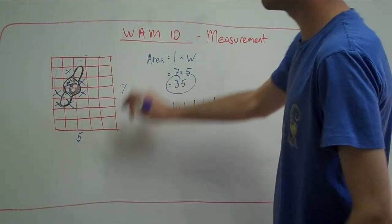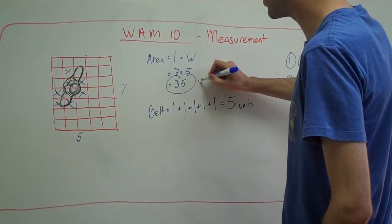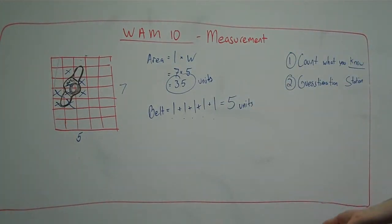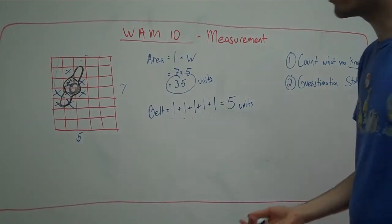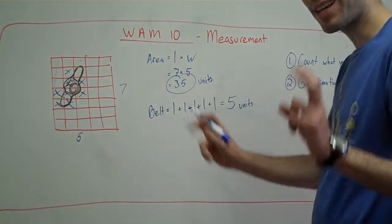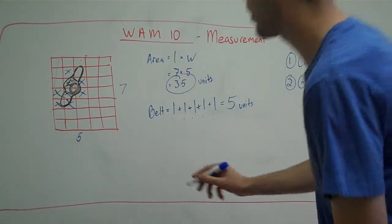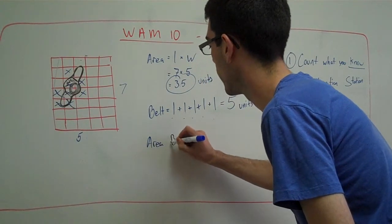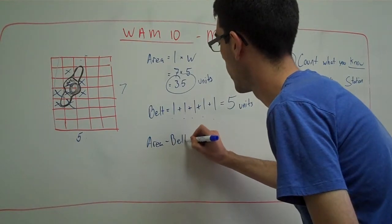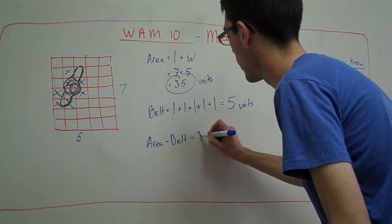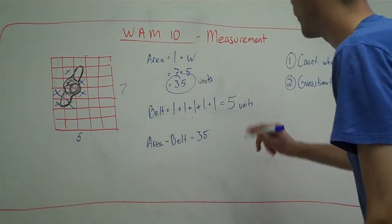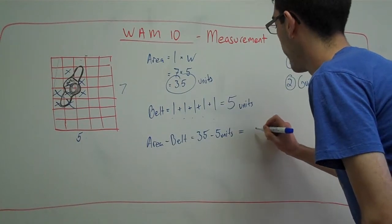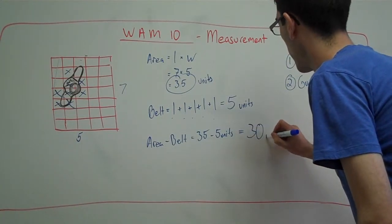The total area of the landing pad is 35 units. The original question asked, how much free space is there? Well, if you want to calculate the free space, we've got to take out the belt. In order to take out the belt, we're going to subtract total area minus the belt. Total area of 35 units. The belt, five units. Final answer, 30 units.